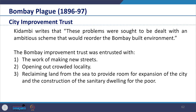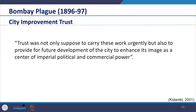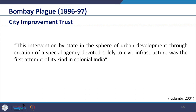Kidambi writes that these problems were sought to be dealt with through an ambitious scheme that would reorder the Bombay built environment. The Bombay Improvement Trust was entrusted with making new streets, opening out crowded localities, reclaiming land from the sea to provide room for expansion of the city, and construction of sanitary dwellings for the poor. The intervention by the state in urban development through creation of a special agency devoted solely to civic infrastructure was the first attempt of its kind designed in colonial India.